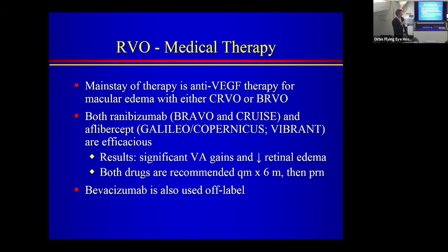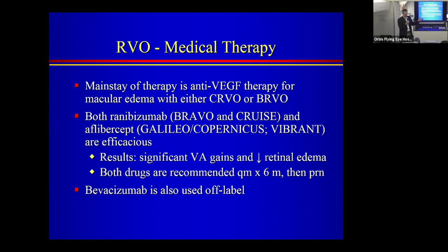The main staple of therapy currently is anti-VEGF for macular edema in both CRVO and BRVO. Both ranibizumab (Lucentis) in the BRAVO and CRUISE trials and aflibercept (EYLEA) in the Galileo, Copernicus, and Vibrant trials showed both agents to be efficacious compared to laser, with significant gains in vision and decreases in retinal edema. Both drugs are recommended monthly for six months then as needed. Bevacizumab (Avastin) has also been shown useful as an off-label anti-VEGF.